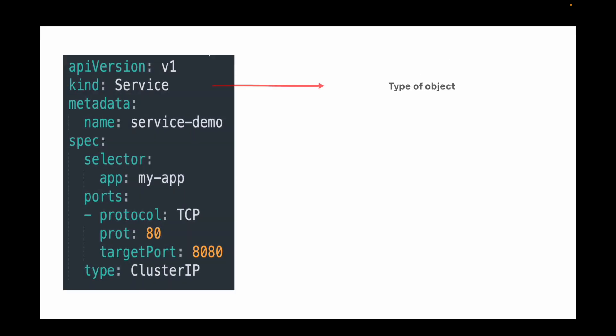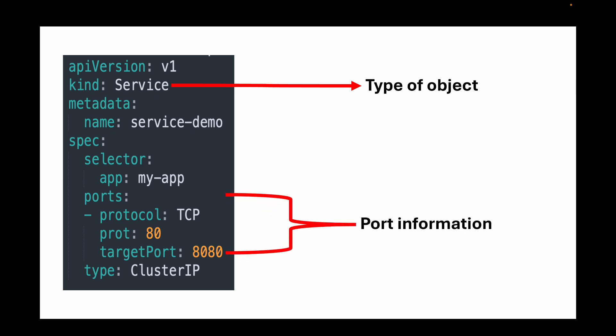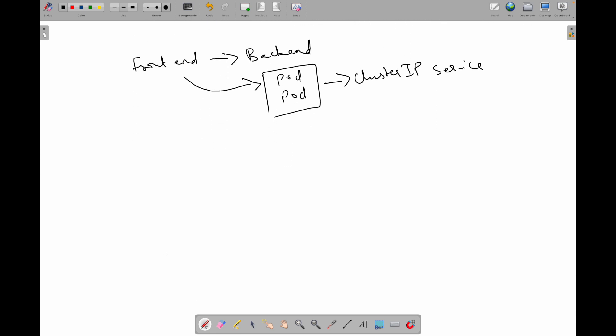Here is example code for a service. We define the kind as Service, specify the port information including protocol, port number, and target port. I've also defined the type as ClusterIP. This service will route traffic on port 80 to pods labeled 'my-app' on port 8080.